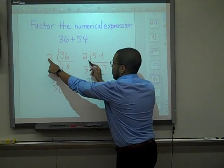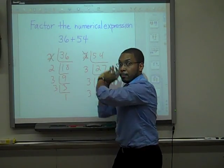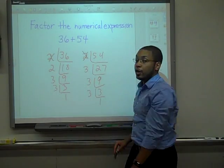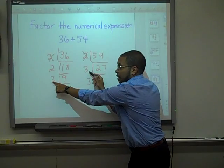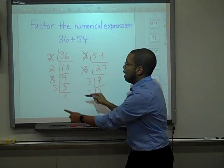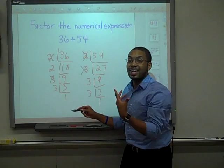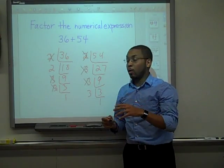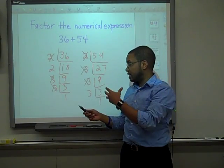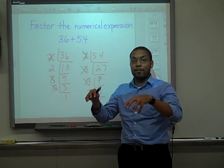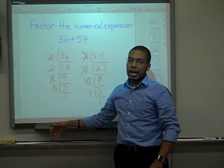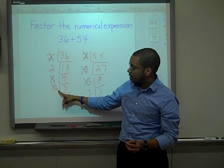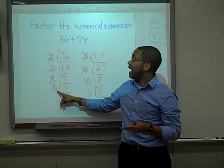I see a 2 — do I see another 2? Yes, I'm going to take those out because I'm factoring them out. I see another 2 — do I see another 2? No. I see a 3 — do I see another 3? Yes, so I'm going to cross both of them out. I see a 3 — do I see another 3? Yes, I'm going to cross both of those out as well. Now I'm going to find the GCF. The GCF is always the product of the crossed-out factors. All you have to do is use one column: 2 times 3 is 6, and 6 times 3 is 18.